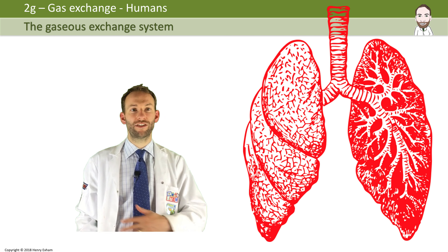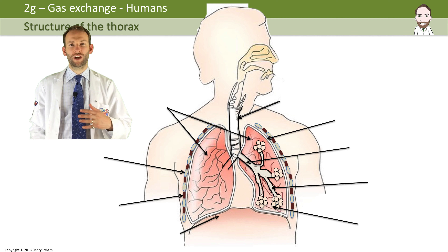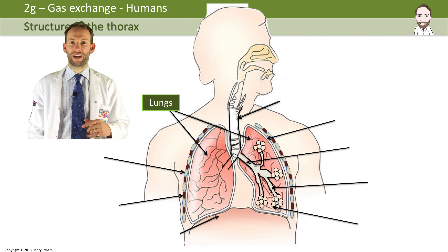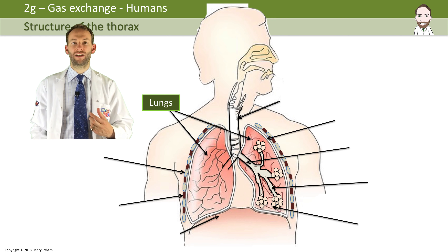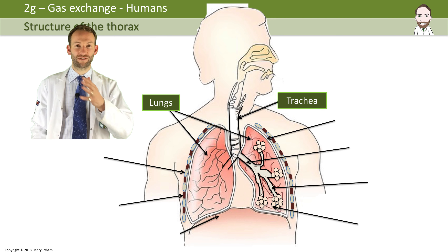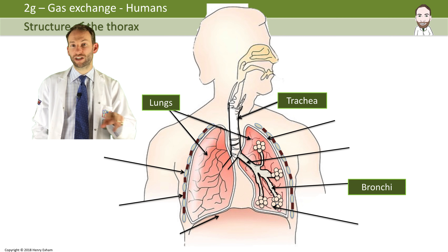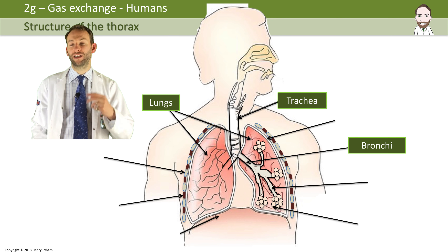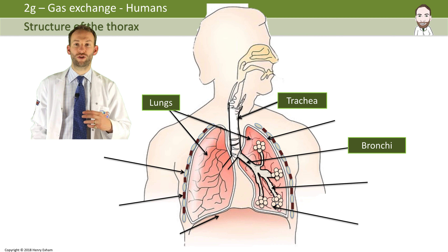Let's have a look at the structure of the thorax, which is the chest area. You've got the two lungs, the left and the right, and leading down to them is the trachea — the windpipe — which carries air from the environment down into the lungs. The trachea splits to go into the left and right lung, and when it splits we call those tubes the bronchi.